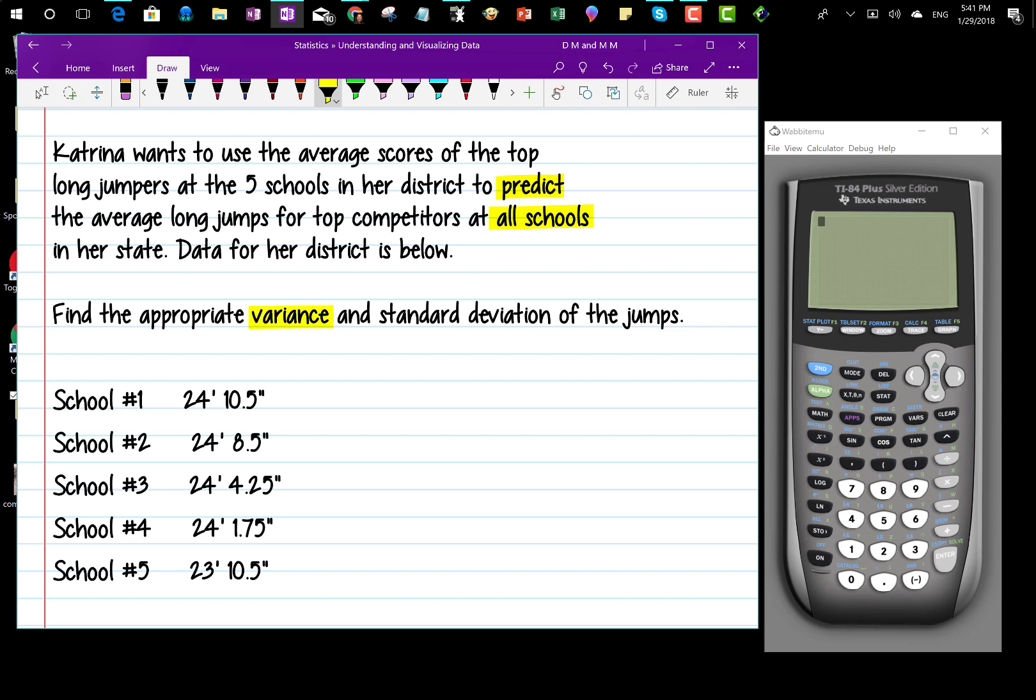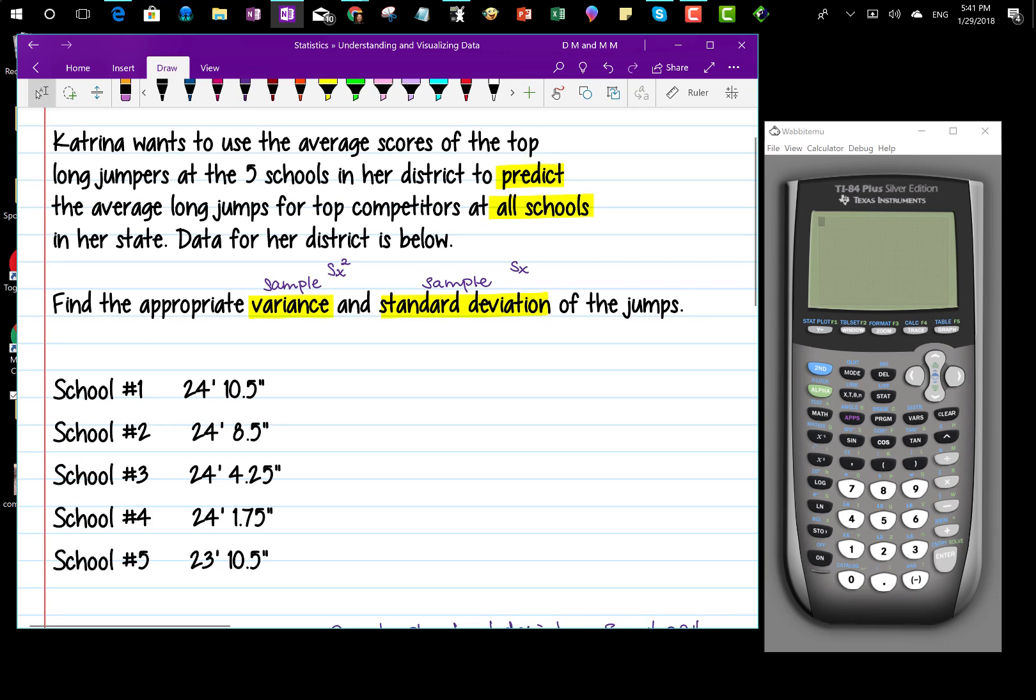When I see variance and standard deviation, I know it's sample variance and sample standard deviation. Sample variance is sx squared, or s sub x squared, and sample standard deviation is just s sub x. We're going to find the appropriate variance and standard deviation of the jumps. Here's the data from her five schools in feet and inches.